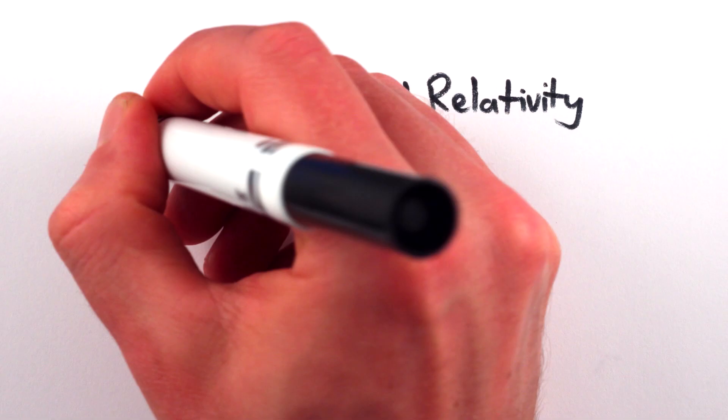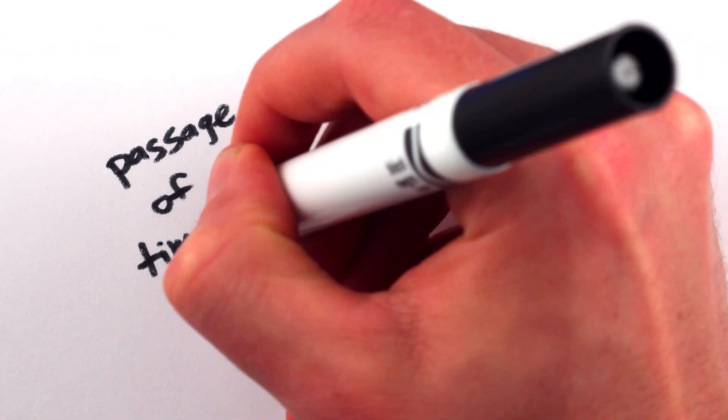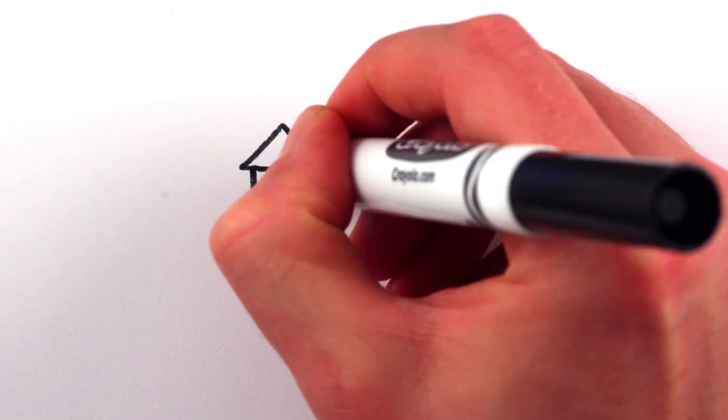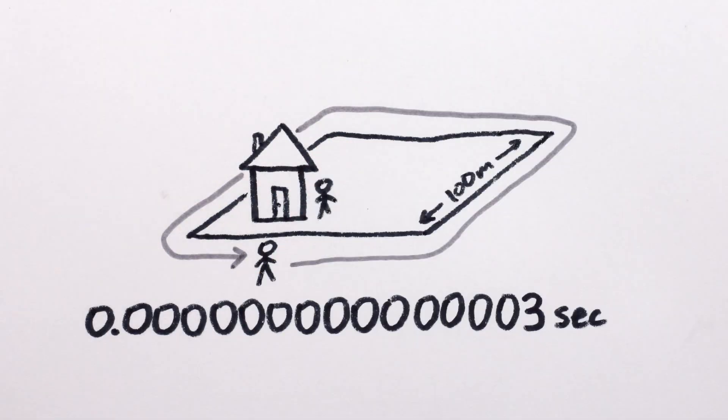We've known for over a century that time and space are really just two components of a single spacetime, and the faster you move, the slower time will pass for you. If you take a walk around the block, you'll be 3 femtoseconds younger than your friend who stayed home.